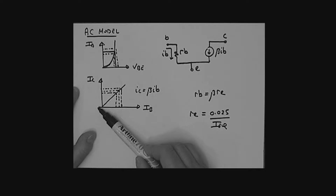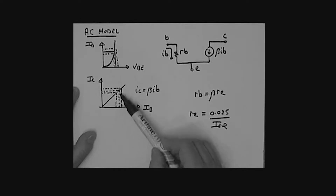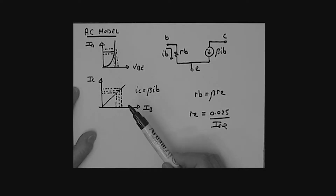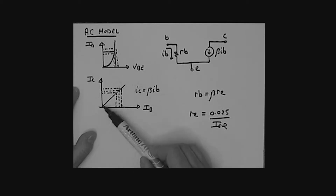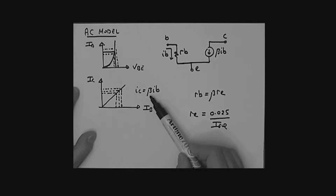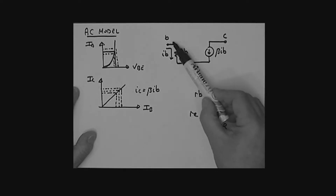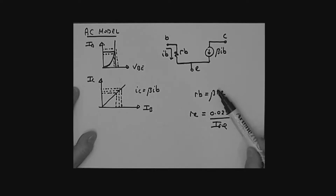We also looked at the IC-IB characteristic — pretty much a straight line, as covered in video four. A change in base current produces a change in collector current, centered around the DC values. We know IC equals beta times IB. If it's a straight line through the origin, the AC and DC beta are the same. We model this with a current source, beta times IB, for the collector current, and IB for the base current, so the emitter current is the sum of both.